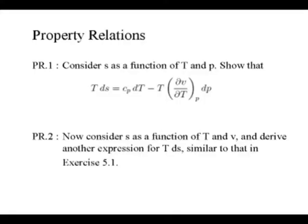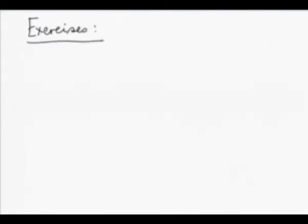PR1 says: consider S as a function of T and P, show that TdS is something. This is absolutely a basic exercise, even more basic than what we have. Before we do that, there are some preliminary topics. For example, we must know how to manipulate and obtain Maxwell's relations, and we should be comfortable with partial derivatives.